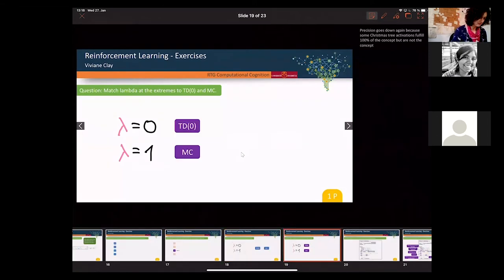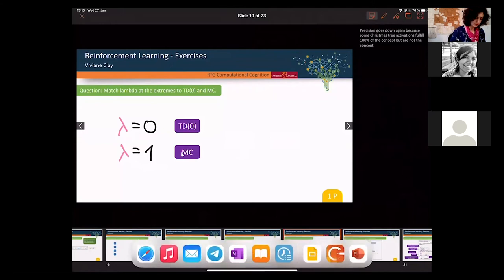So the answer is, if we have lambda at 0, this is like TD 0 and we have, if we have lambda at 1, this is like Monte Carlo. So, and if you got this right, give yourself a point.